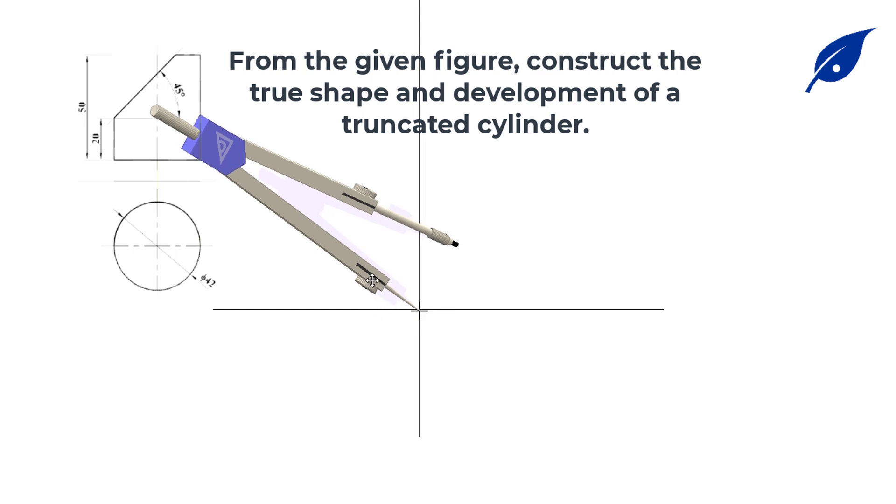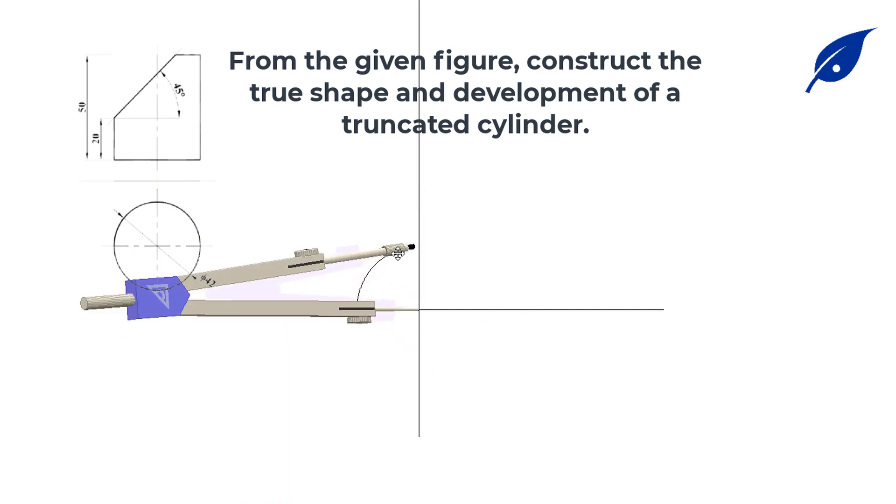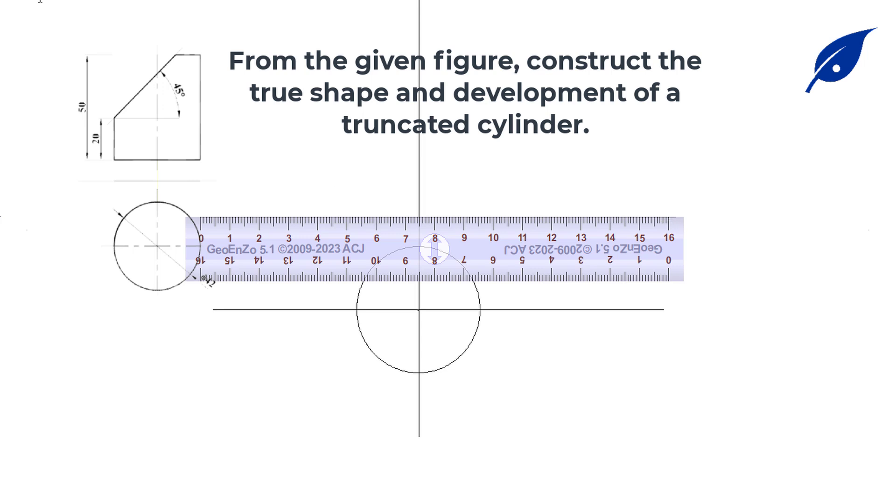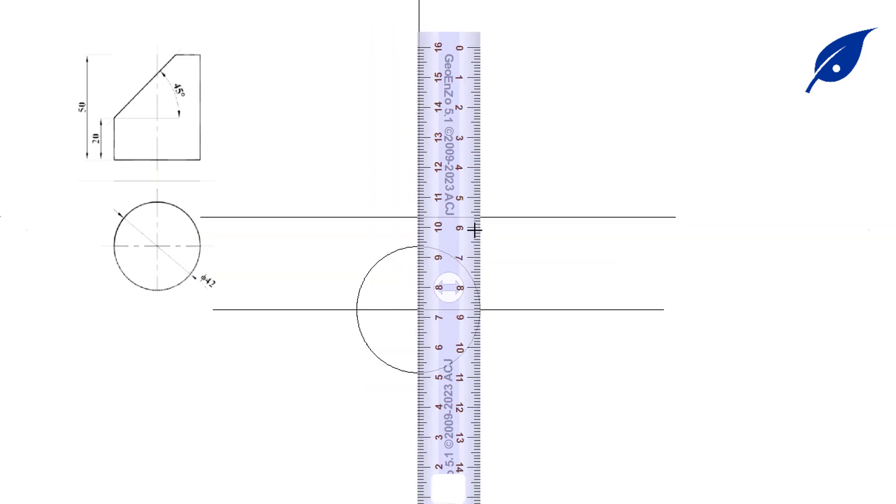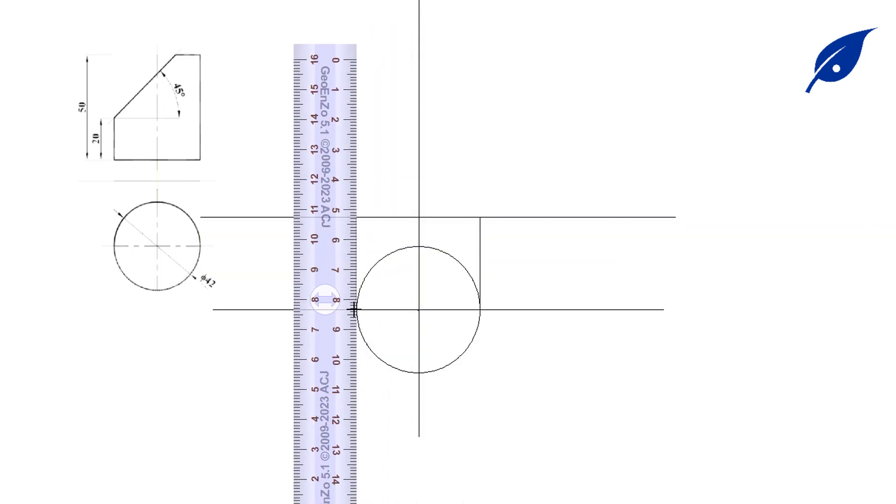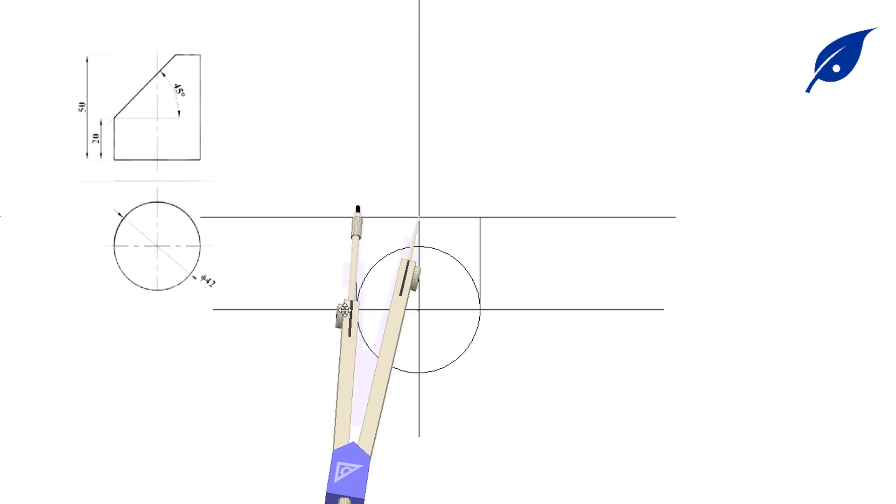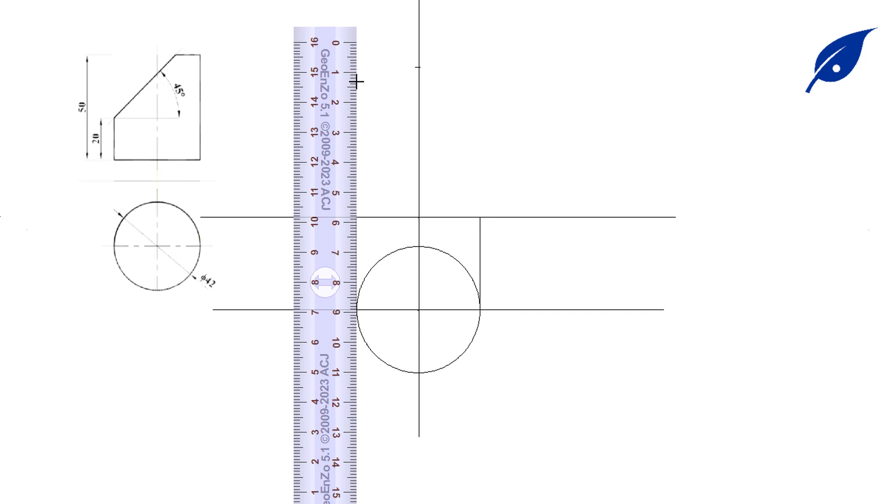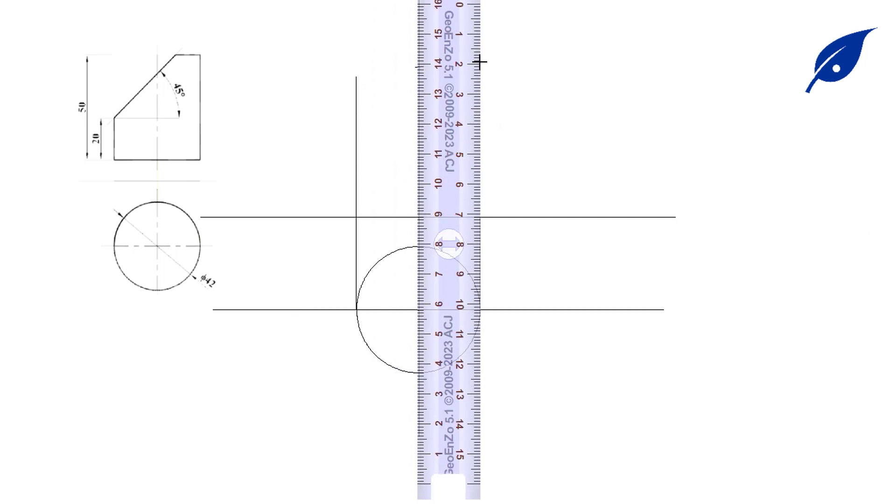We're going to draw the radius of the circle. Now from the given information in the diagram, the perpendicular height is 50 millimeters, the distance from the truncated point is 20 millimeters to the base, and the angle at which it is truncated is 45 degrees.